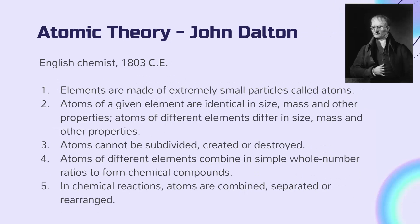Much later, in 1803, the English chemist John Dalton laid out his atomic theory. This theory includes the idea that elements are made of extremely small particles called atoms, that each element is made up of atoms that are identical to each other, and that different elements are composed of different atoms. It also includes that atoms cannot be subdivided, created, or destroyed. He also describes how atoms interact with each other to form chemical compounds, and how they behave in chemical reactions.